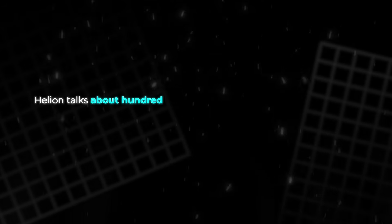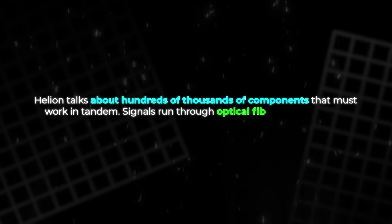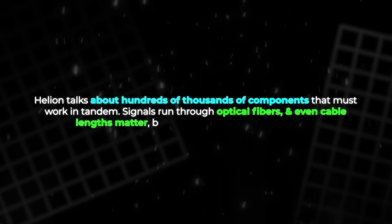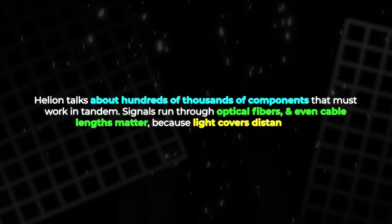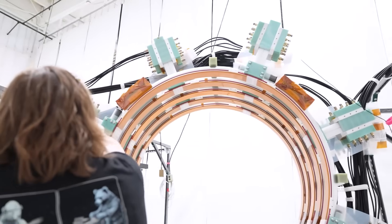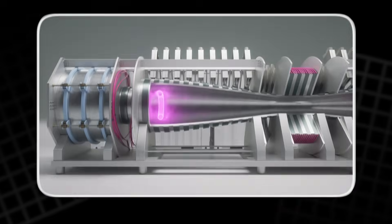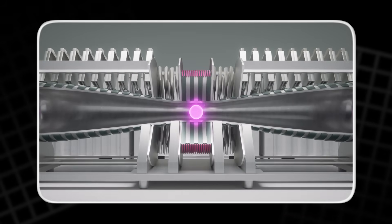Helion talks about hundreds of thousands of components that must work in tandem. Signals run through optical fibers, and even cable lengths matter, because light covers distance fast. Engineers measure fiber runs to the inch because, in timing terms, an inch is not close enough. It can shift the moment a magnet fires.